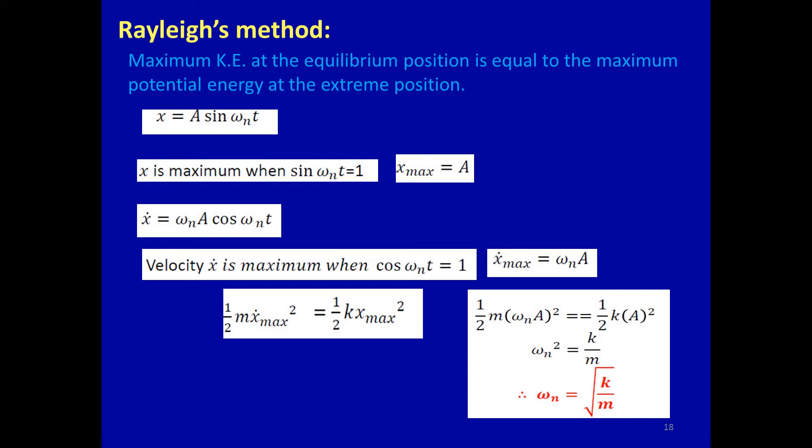Next is Rayleigh's method, which is very important in unit number six. Numerical problems and short notes based on this method are frequently asked in examinations, including question numbers 11 or 12. This method states that the maximum kinetic energy at the equilibrium position equals the maximum potential energy at the extreme position. The generalized equation is x = A sin(ω_n t), where x is displacement, A is a constant, ω_n is frequency, and t is time. x is maximum when sin(ω_n t) = 1, so x_max = A.